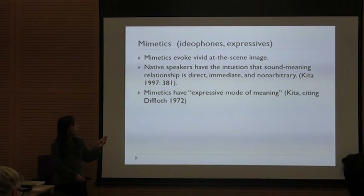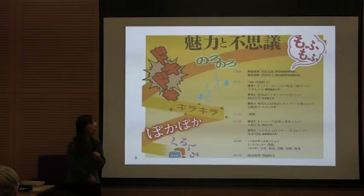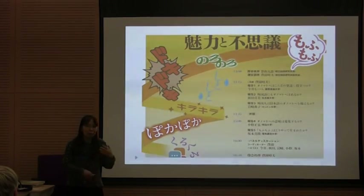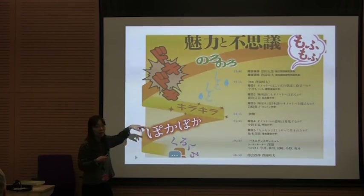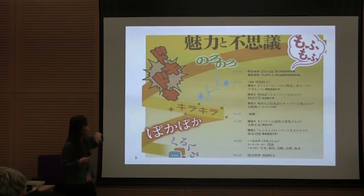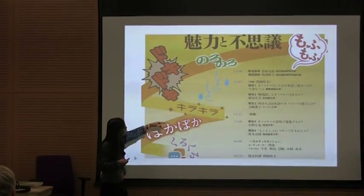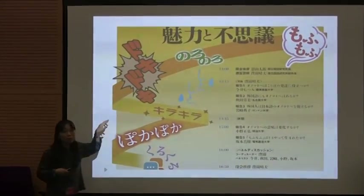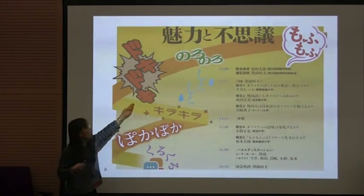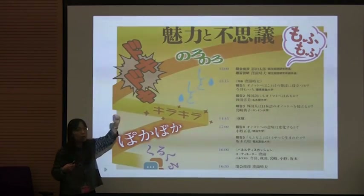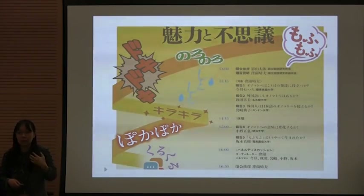Difflot said that the meaning of mimetics is different from the meaning of other words — it's an expressive mode of meaning. I just wanted to demonstrate the type of images we associate with some mimetic words. There are a few mimetic words on this poster of an event I'm going to participate in in January — six or seven words here — and each word is written in such a way that it evokes the kind of image it represents. For example, heart throbbing or shocking. That's how native speakers think of mimetics: something that evokes image and feeling.